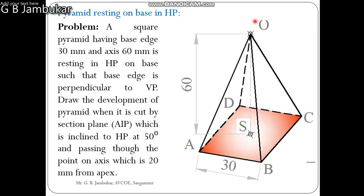When we observe the top view, then we see the square ABCD and this edge AB of the square is perpendicular to VP, that is XY in the top view. Every corner of the square is connected with the center O.